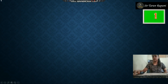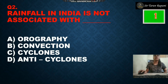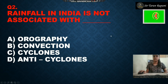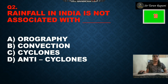Our next question is: rainfall in India is not associated with — option A is orographic, option B is frontal, option C is cyclones, and option D is anti-cyclones. The timer is up and our correct answer is anti-cyclones, option number D.